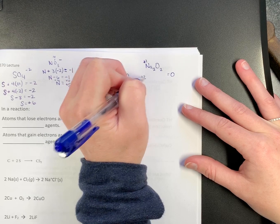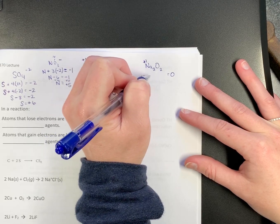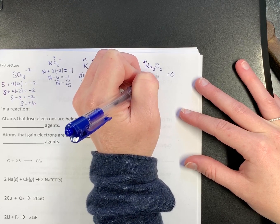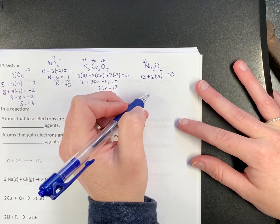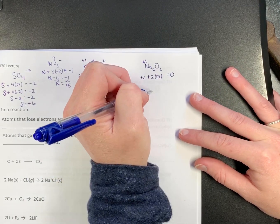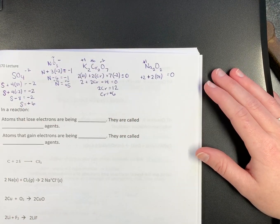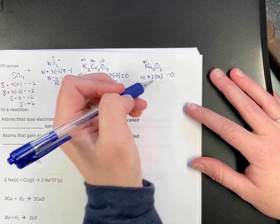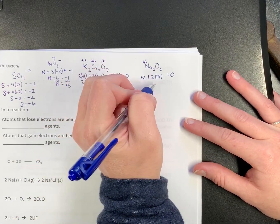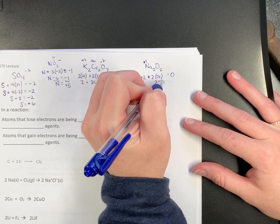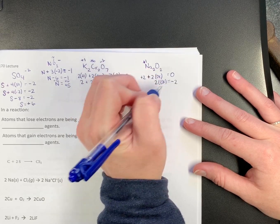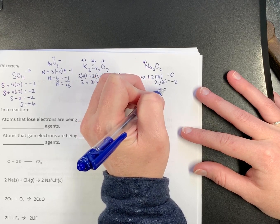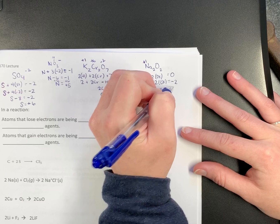So let's see what oxygen needs to be. So we have 2 sodiums. So we have plus 2 plus 2 times oxygen equals 0. I'm putting OX for oxygen because my O's and 0's look similar. I don't want you to get confused. So you know that 2 times oxygen is negative 2. So what's oxygen's charge here? Negative 1.